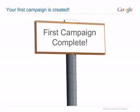And that's all there is to it. You've now created your first campaign, so once you're happy with all of the details, just click save and continue to billing. You will need to add in billing details before your ad starts to run. In addition, some ads need to be reviewed by the Google team before they are eligible to run.